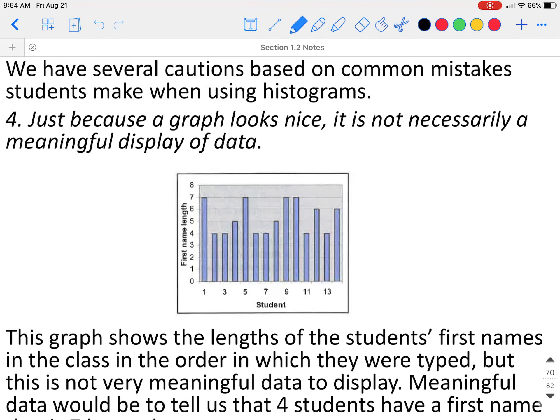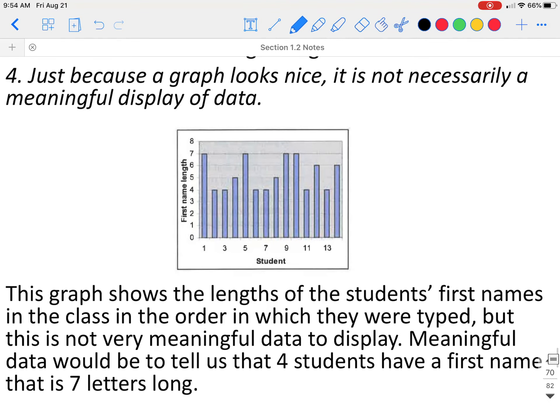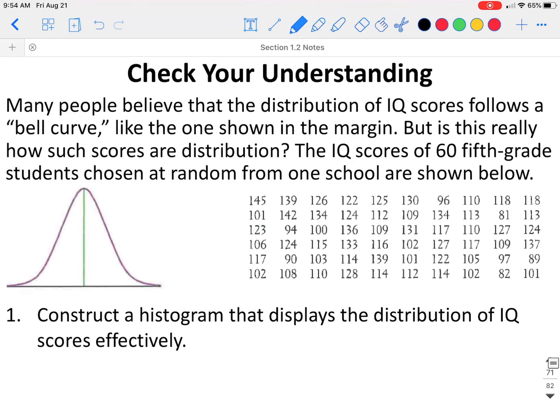Another common mistake, just because a graph looks nice, it is not necessarily a meaningful display of data. This graph just tells us the length of each child's name. The first child who was surveyed has a name that is a length of seven. The second student that was surveyed has a name of length four. The order in which the students were surveyed actually doesn't tell us anything about this data.